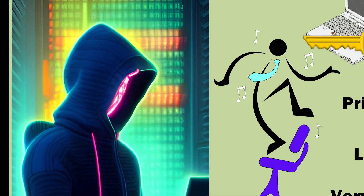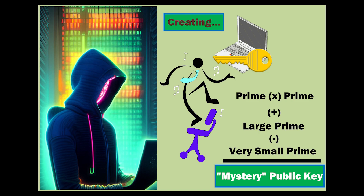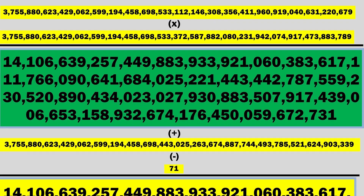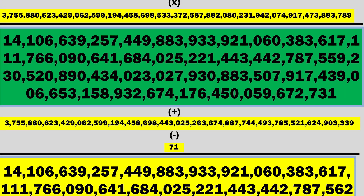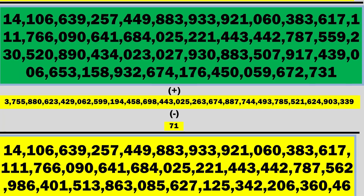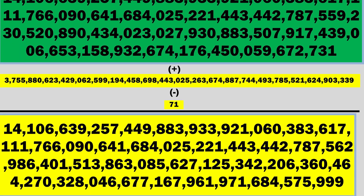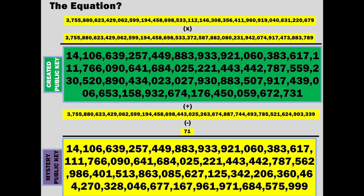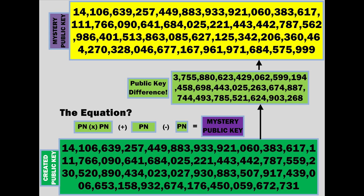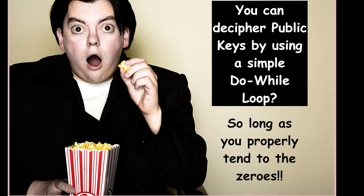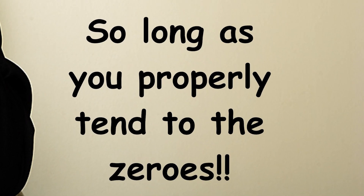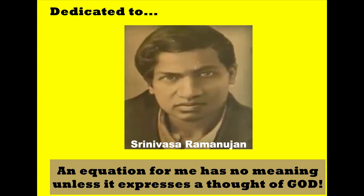One possibility is this: a large prime times a large prime, plus another large prime, minus a very small prime, gives us the mystery public key. These two primes multiply together to give us our created public key. We add a similar large prime and then subtract a very small prime — and there we have it, our mystery public key. You can decipher public keys by using a simple do-while loop, so long as you properly tend to the zeros. As the speaker notes: an equation to me has no meaning unless it expresses the thought of God.